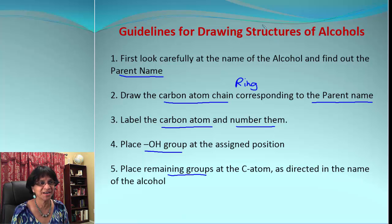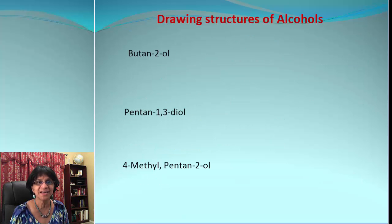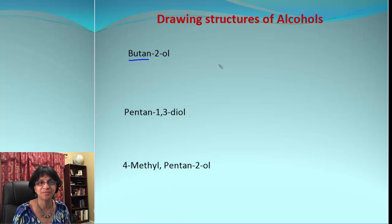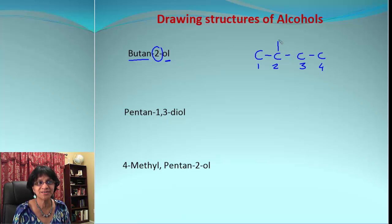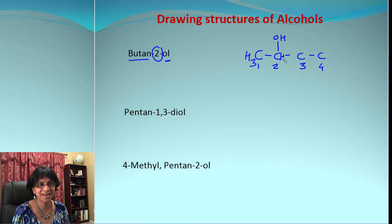Let's work on some real examples. Here is our first example: butan-2-ol. The root name, the parent name, is butane, so we need a chain of 4 carbon atoms. Let's number them 1, 2, 3, and 4. At position 2 it says OL, meaning we have the OH group there. The only part remaining is to fill in the correct number of hydrogen atoms. And there it is — that's our 2-butanol.